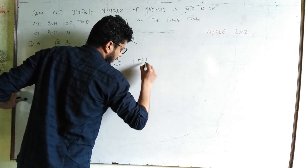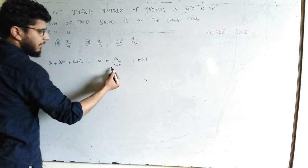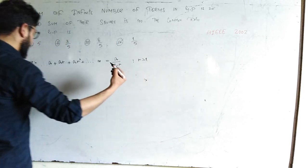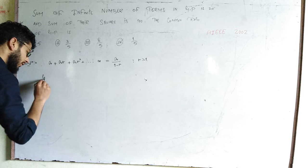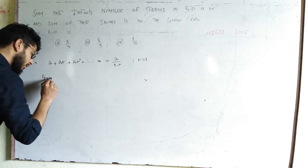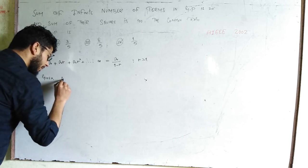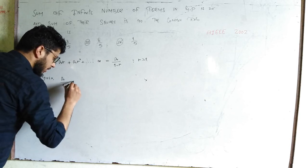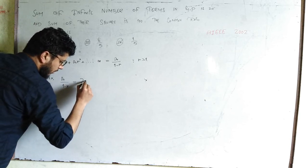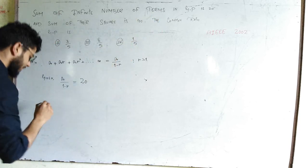The formula is a/(1-r) when |r| < 1. So we have a/(1-r) = 20. Also,